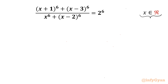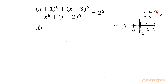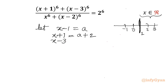Let's get started with our substitution. If we look on a number line, the numbers are minus 1, 0, 2, 3 and x^6 is also there. If I search the middle point it will be 1. So our substitution would be: let x minus 1 equal to a. So x+1 will be a+2, x-3 will be a-2, x will be a+1, and x-2 will be a-1.